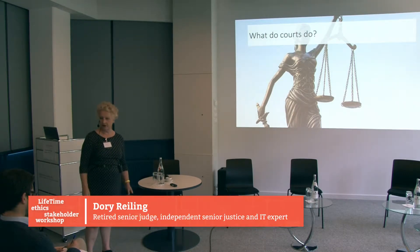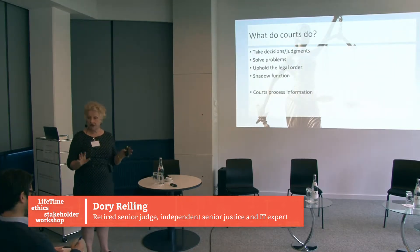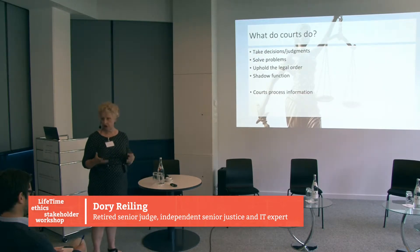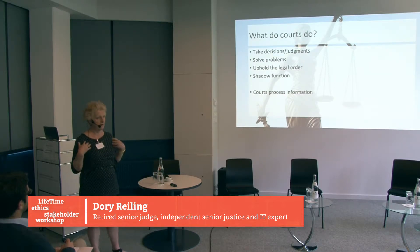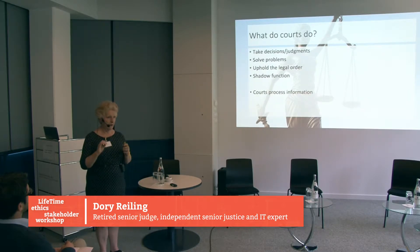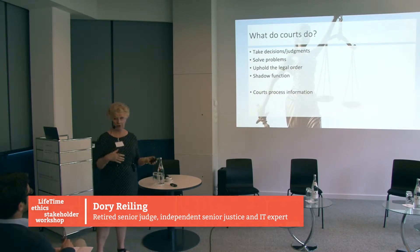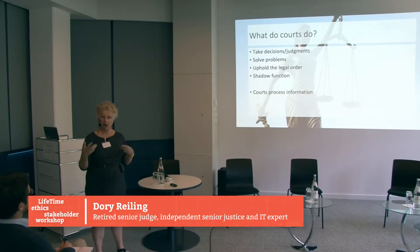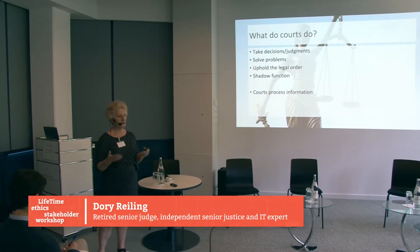Let me introduce what courts actually do, because there are all sorts of images of what courts do. The basic purpose of courts is that they take decisions and produce judgments. In some cases that means they solve actual problems, but in a lot of cases it doesn't, because courts can take a legally valid decision but it doesn't solve the underlying problem. They uphold the legal order mainly through the shadow function that courts have. The judiciary publishes about 50,000 decisions a year, and those decisions are guidelines not just for the parties concerned but also for other people. That's the important societal role that courts have.